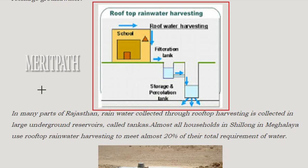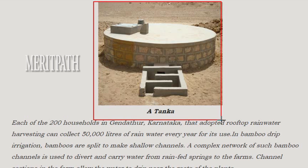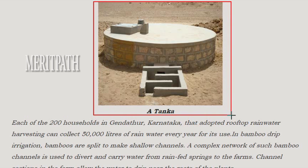In many parts of Rajasthan, rainwater collected through rooftop harvesting is stored in large underground reservoirs called tankas. Almost all households in Shillong in Meghalaya use rooftop rainwater harvesting to meet nearly 20% of their total water requirements. Each of the 200 households in Gendathur, Karnataka that adopted rooftop rainwater harvesting can collect 50,000 liters of rainwater every year.